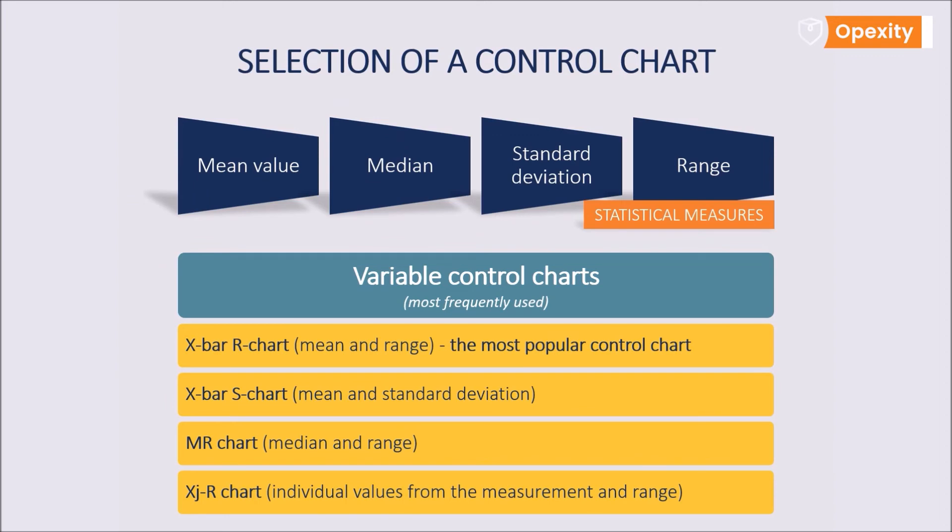Instead of the X bar R chart, the MR chart with the median can be used. It then replaces the mean value, as can charts based on the mean value and XS standard deviation, or even charts with a single measurement and XJR range. This all depends on the characteristic of the product or process being evaluated and our experience.